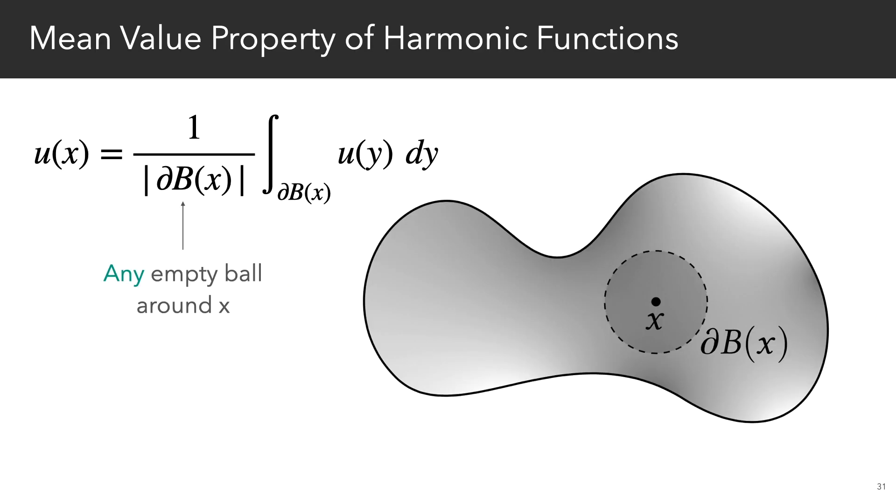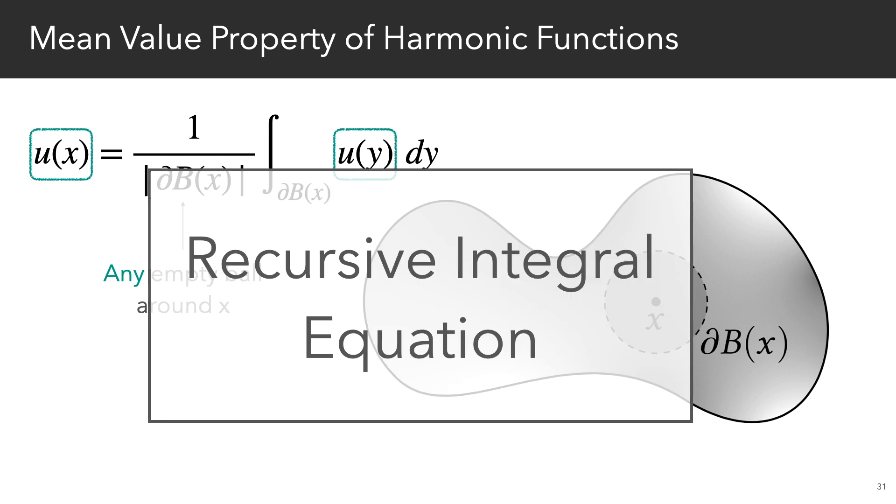So the mean value property of harmonic functions tells us that the solution at any point x is just the average value of the solution over any empty ball centered on x. So here, the unknown quantity u is again an integral over u itself. And so just like the rendering equation, this too is a recursive integral equation.